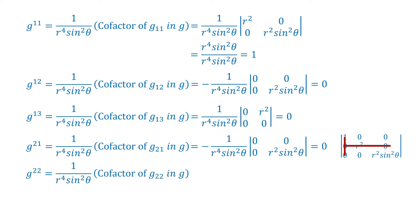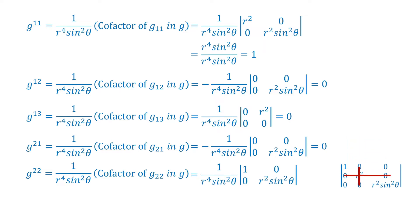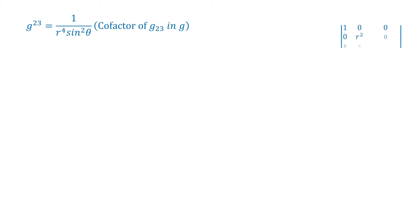g^22 equals 1 by r to the power 4 sin square theta, into the co-factor of g22 in g, which equals 1 by r to the power 4 sin square theta, into the determinant of: 1, 0; 0, r square sin square theta — equal to r square sin square theta divided by r to the power 4 sin square theta, which equals 1 by r square. Then g^23 equals minus 1 by r to the power 4 sin square theta, into the determinant of: 1, 0; 0, 0 — which is equal to 0.